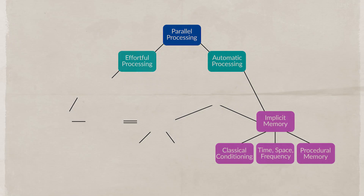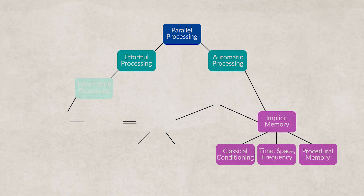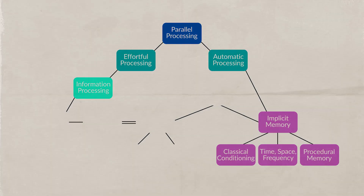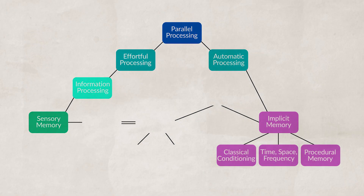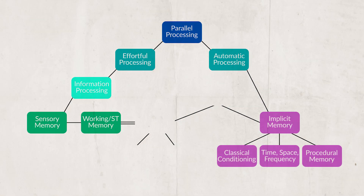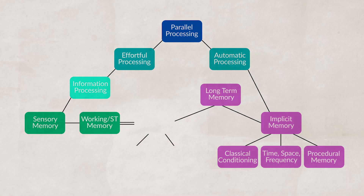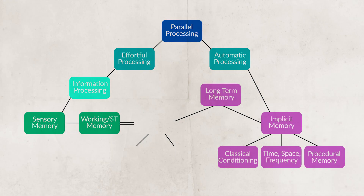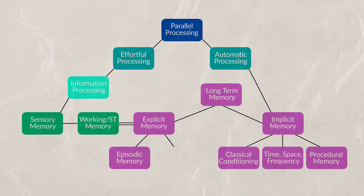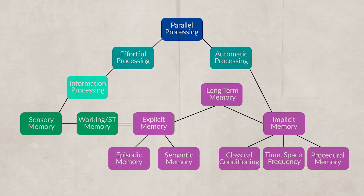Our effortful processing is processed in the hippocampus and frontal lobe. This uses the information processing model from our Unit 5, Topic 1 video: first we have our sensory memory, which goes to our working or short-term memory, and from there into our long-term memory. Long-term memory is represented by explicit memories, which consist of episodic memories — experiences — and semantic memories — facts.